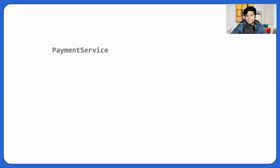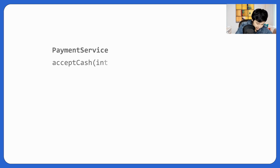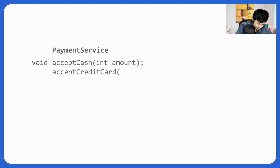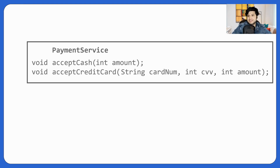Now we can easily build the payment service. It will have two methods: `acceptCash(int amount): void` and `acceptCreditCard(String cardNumber, int CVV, int amount): void`. These correspond to the two payment methods we have — cash and credit card. Going forward, UPI or other methods could be added. We're done with payment service. Let's move to the main service — the parking service.